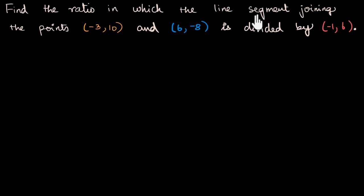Find the ratio in which the line segment joining the points (-3, 10) and (6, -8) is divided by (-1, 6).